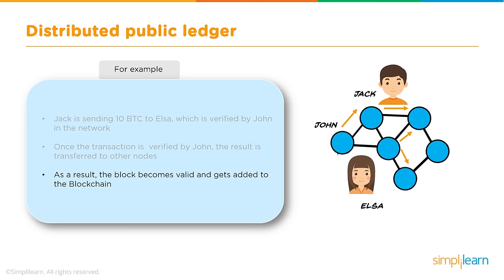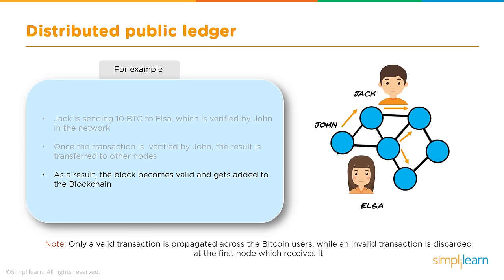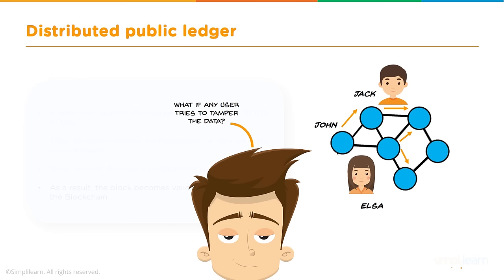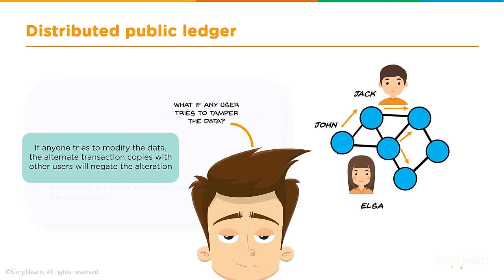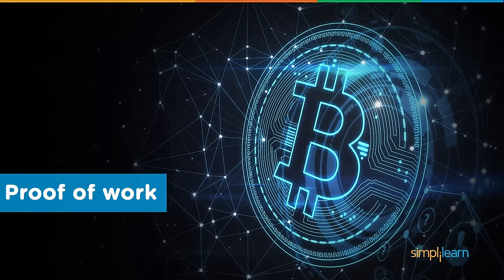Only valid transactions are propagated across Bitcoin users; invalid transactions are discarded at the first node that receives them. Every user in the blockchain maintains a copy of the ledger. If someone tries to tamper data in one block, other nodes identify the invalid block and discard it. Any modification attempt is negated by the alternate transaction copies held by other users.